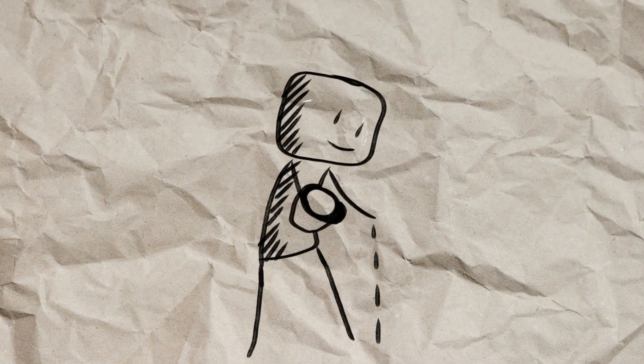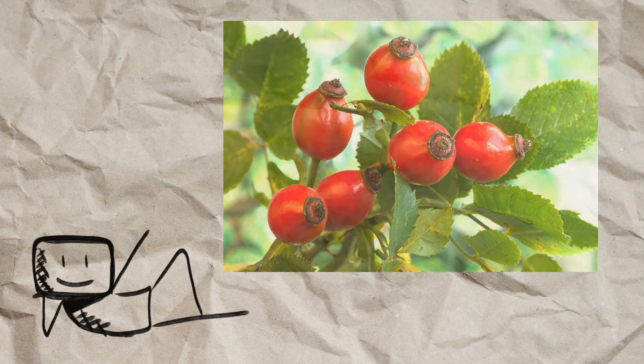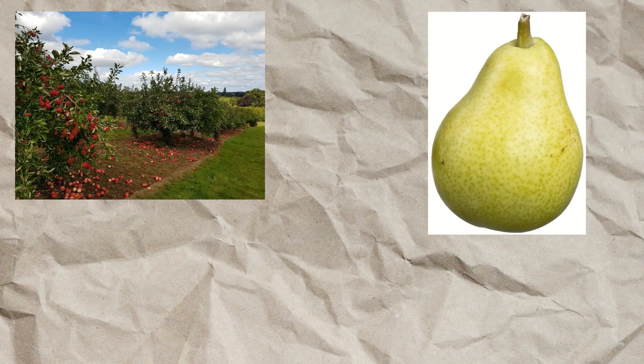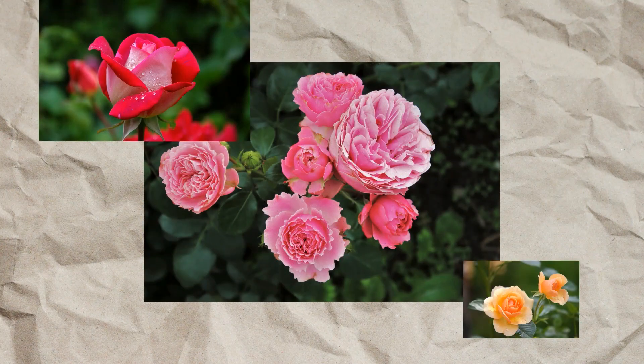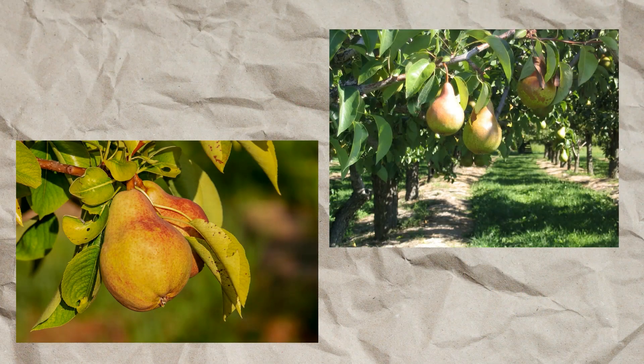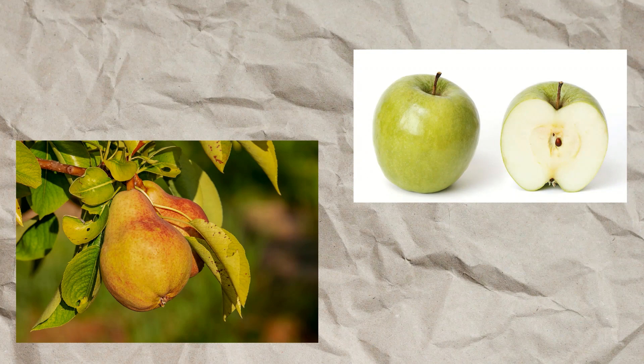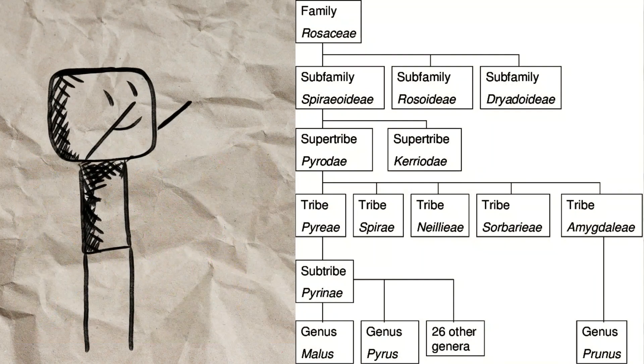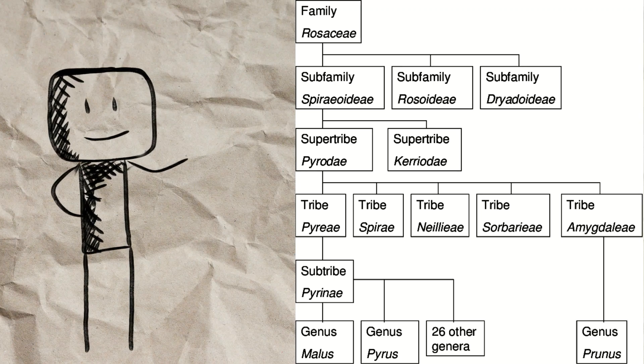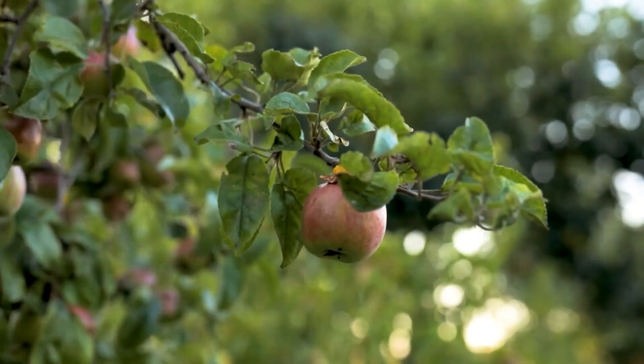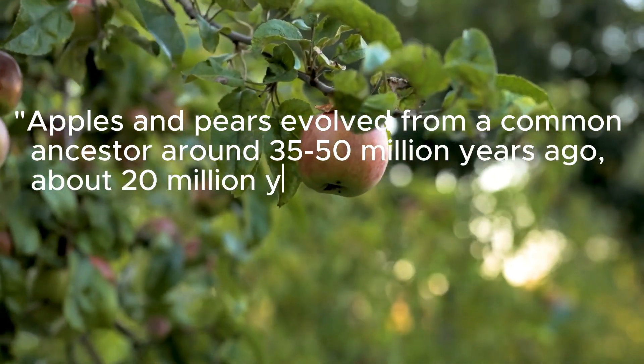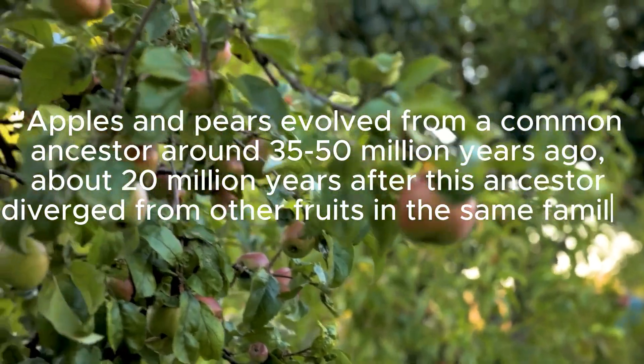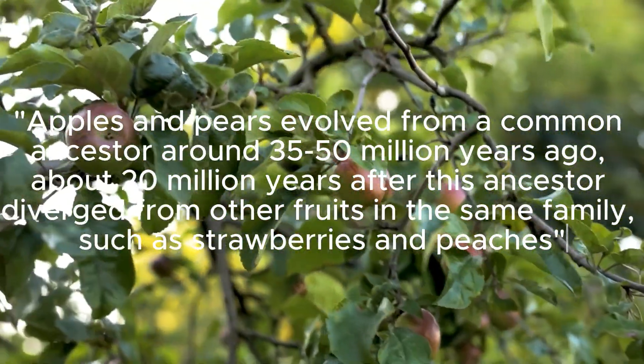Anyway, in the rose family we find, let's take for example, three genera: Malus, Pyrus, and Rosa. Within the Rosa genera are multiple species of roses. In Pyrus, we find multiple species of pears, which are closely related to apple. I mean, you could probably tell from how they look—they're in the same tribe and subtribe and share a common ancestor. Apples and pears evolved from a common ancestor around 35 to 50 million years ago, about 20 million years after this ancestor diverged from other fruits in the same family, such as strawberries and peaches.